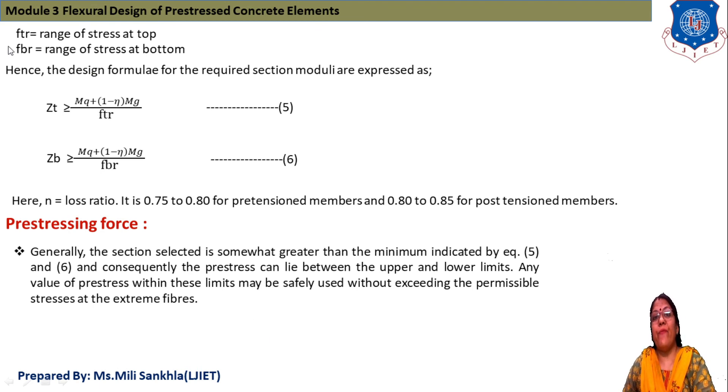FTR is the range of stress at top, FBR is the range of stresses at bottom. η is the loss ratio, which is 0.75 to 0.80 for pre-tensioned elements and 0.80 to 0.85 for post-tensioned members. This range is given according to type of post-tension and pre-tension.